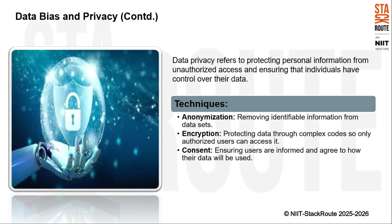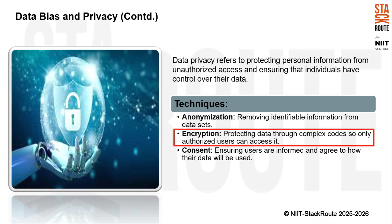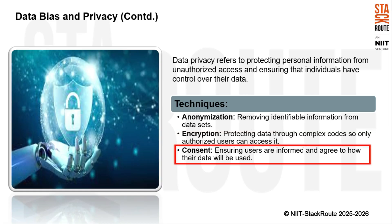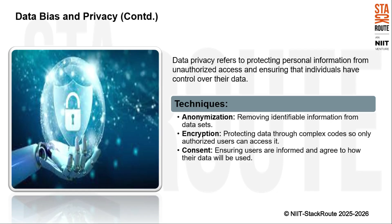To achieve data privacy, there are several key techniques we employ. First, anonymization — removing identifiable information from datasets so that individuals cannot be traced back from the data. Second, encryption — protecting data by converting it into complex codes, where only authorized users with the correct decryption key can access the information. Third, consent — ensuring users are informed about how their data will be used and provide their agreement, giving users control over their personal information.